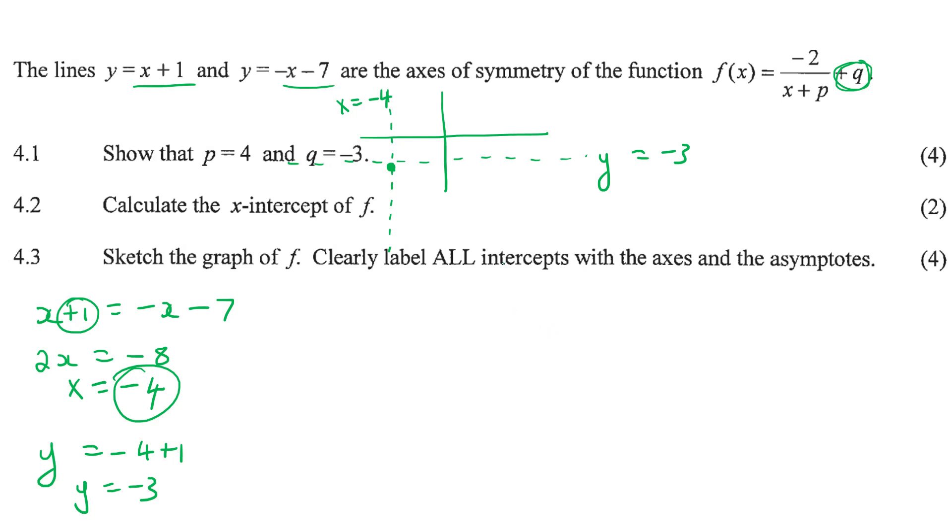So when you then go, well actually, then we could say therefore, the equation is going to be f of x equals to minus 2 over x plus 4, and then q would be minus 3. So we can see then that p is 4 and q is minus 3. And that's exactly what they wanted us to show.